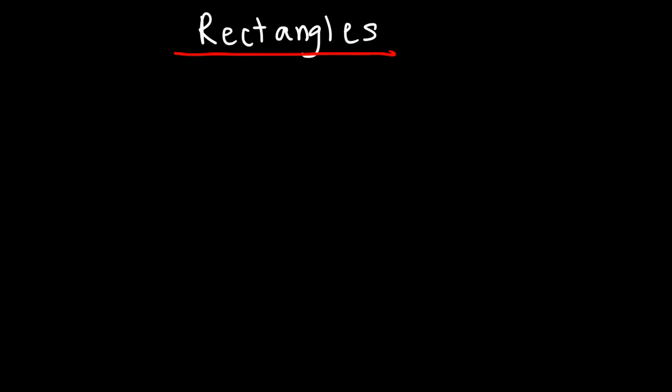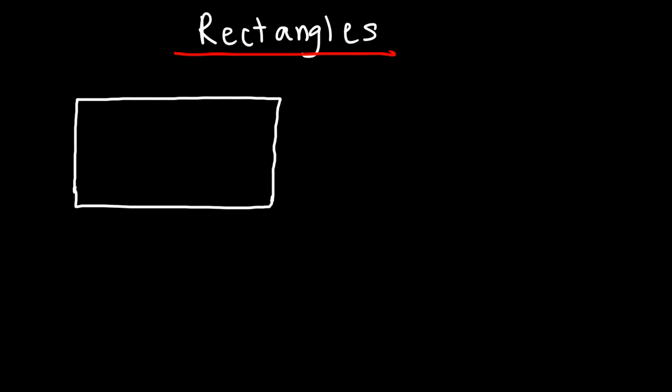In this video we're going to focus on rectangles — their properties and how to solve problems associated with them. A rectangle is a quadrilateral, and a quadrilateral is a four-sided polygon. Rectangles are also a special type of quadrilateral known as parallelograms.